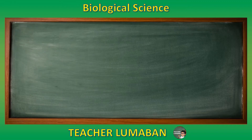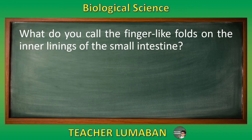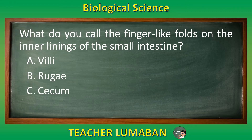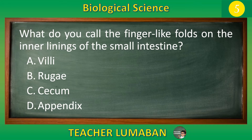What do you call the finger-like folds on the inner linings of the small intestine? Letter A: villi. Letter B: rugae. Letter C: cecum. Letter D: appendix. The correct answer is letter A, villi. The finger-like folds on the inner linings of the small intestine are called villi.